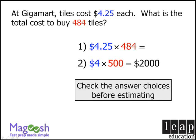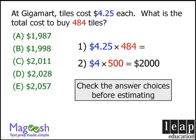For example, what if our answer choices looked like this? What if they were all very close to each other and all tightly packed around $2,000? If we estimate, we see that our total cost is about $2,000 — but we cannot determine which answer choice to select. As you can see, we cannot use estimation if our answer choices are all very close together.